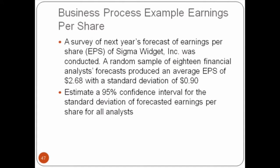This is a business process example based on earnings per share, which most companies report every quarter. There are many Wall Street analysts who monitor every company and what earnings they're likely to give, so they provide estimates. A survey of next year's forecast of earnings per share EPS of a company named Sigma Widget was conducted. A random sample of 18 financial analysts produced a forecast of EPS with average $2.68 and standard deviation of $0.90.